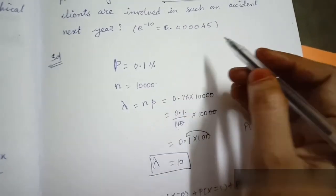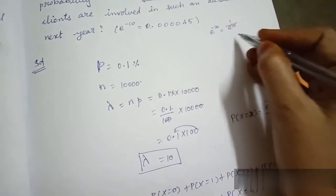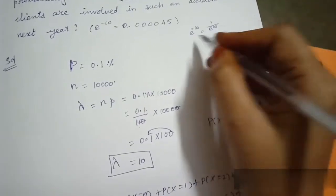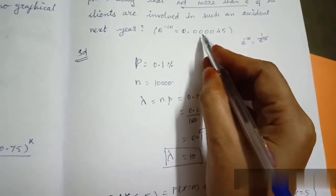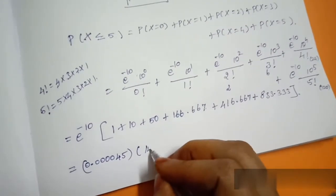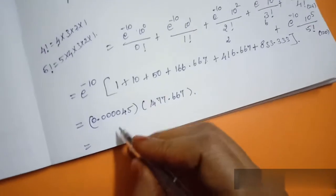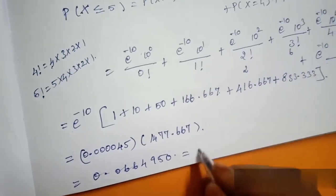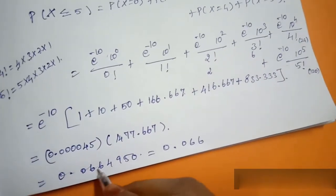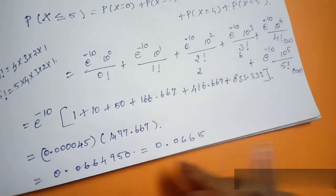From the exponential table, e^(-10) equals 1 divided by e^10, which gives approximately 0.0000454. Multiplying 1477.667 by 0.0000454 gives 0.0664950. Rounding to 4 decimal places and noting the last digit rounds up due to 9, the final answer is approximately 0.0665.